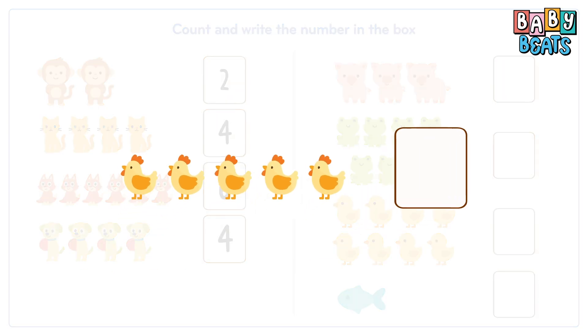Now the chicks. Count. One, two, three, four, five. We have five chicks. Write number five.